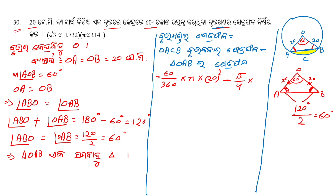A square means 2 squared, so kodi era square. So 60 by 360, which is 1 by 6, into pi — so 1 by 6 into pi into kodi era square.